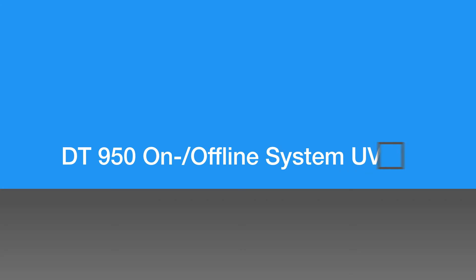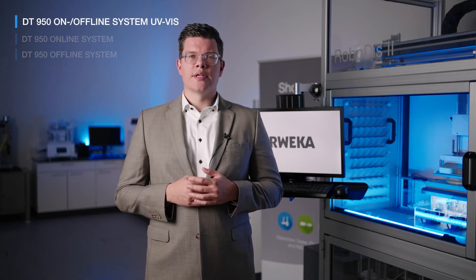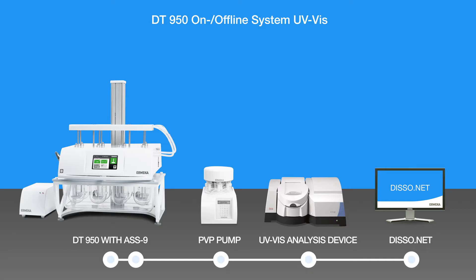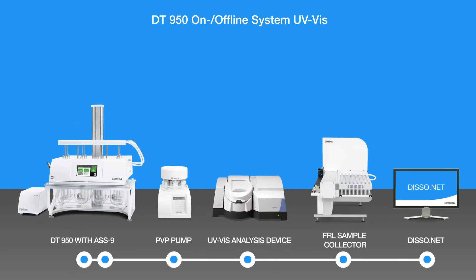The third system combination is a DT9N50 on-offline UV-Vis system with disso.net. This system is a DT9N50 online system, but with an added FRL sample collector to store samples after the UV-Vis analysis for later analysis — for example HPLC.